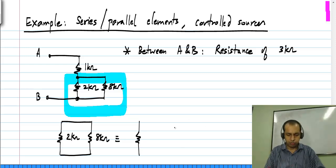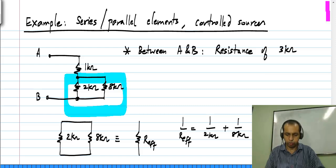If I call this the effective resistance, 1 over R effective will be 1 by 2 kilo ohm plus 1 by 8 kilo ohms.